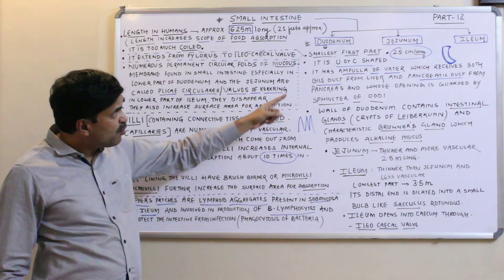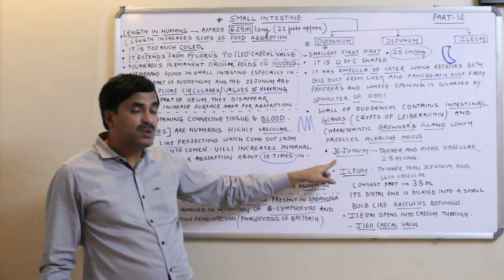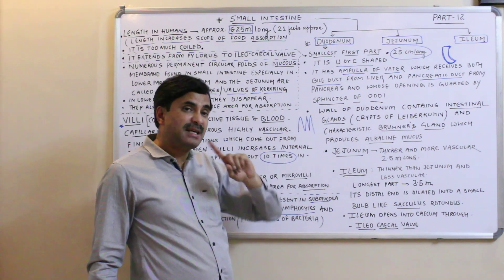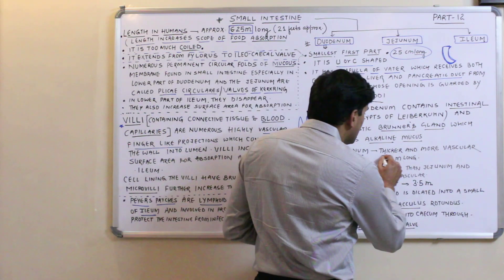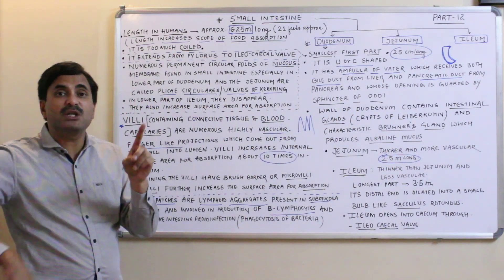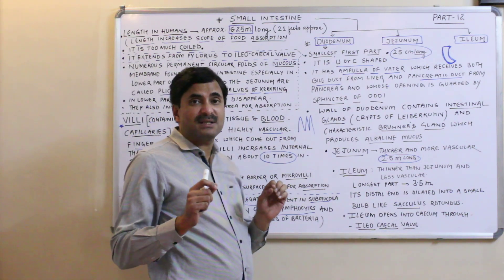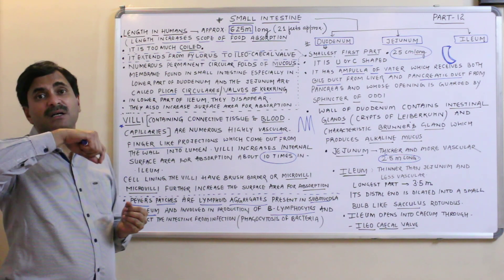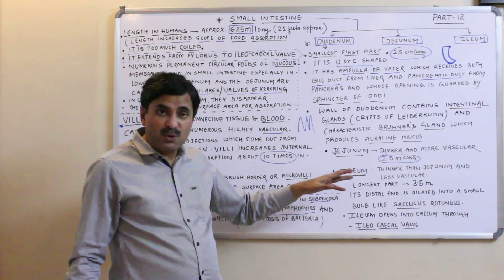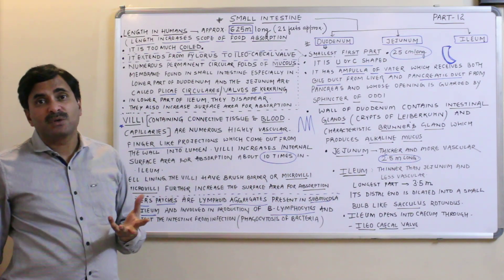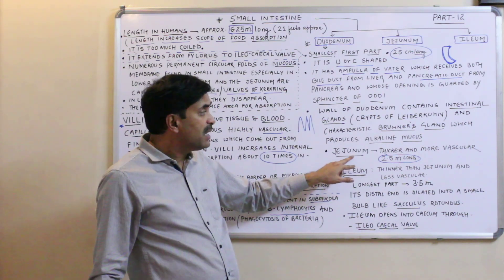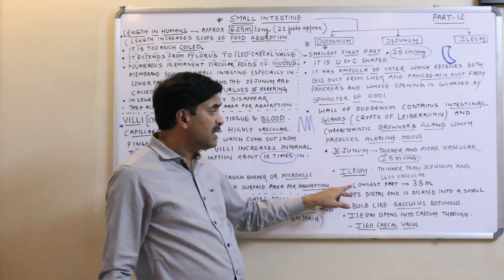The next part is the jejunum. The jejunum is thicker, more vascular, and 2.5 meters long. It is present between the duodenum and the ileum, and its prime role is to connect the duodenum with the ileum, while also helping in absorption. The last part is the ileum, which is thinner and less vascular than the jejunum.